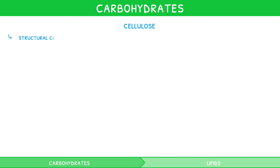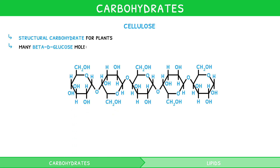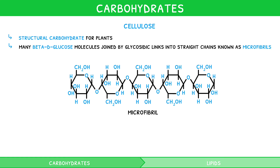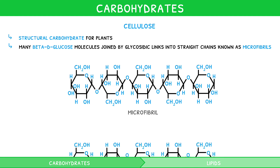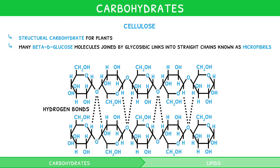Cellulose is the structural carbohydrate for plants. It is composed of many beta-D glucose molecules joined by glycosidic links into straight chains known as microfibrils. In cellulose, it is important to note that the beta-D glucose alternates in orientation. Between adjacent microfibrils, there are hydrogen bonds, which also increase its tensile strength. Take some time to ensure you are comfortable drawing these three polysaccharides and identifying the location of their glycosidic link.